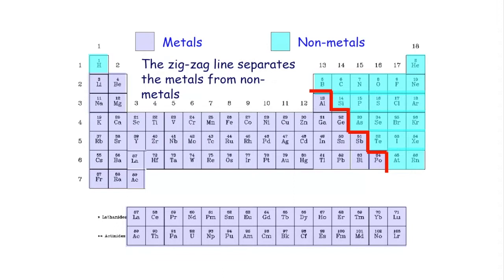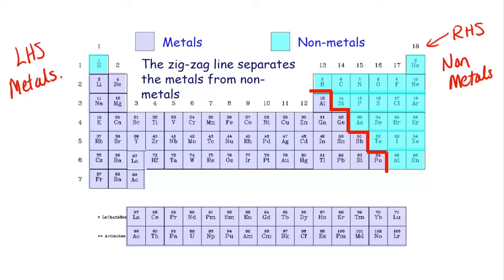When we look at the periodic table, there is a zigzag line that starts from boron and goes all the way down to astatine. Everything on the right-hand side of this line are non-metals, and everything on the left-hand side — shown in purple — are metals. The one exception is hydrogen, which is a non-metal but appears in group one; you'll learn more about that at GCSE. Most elements on the periodic table are metals, and they all have very specific uses and properties.